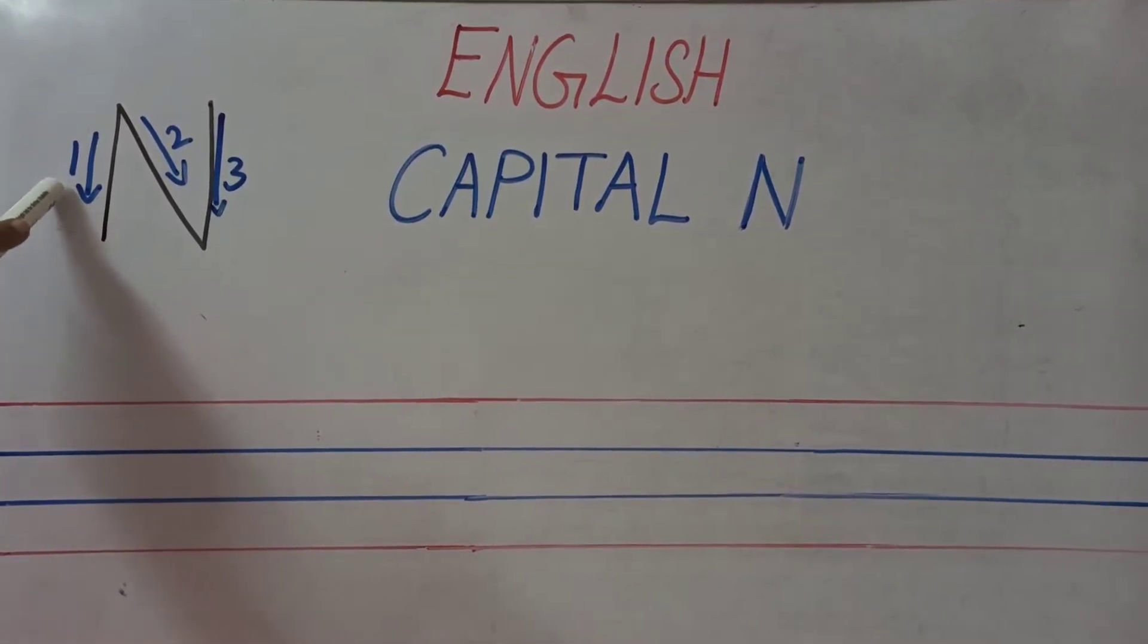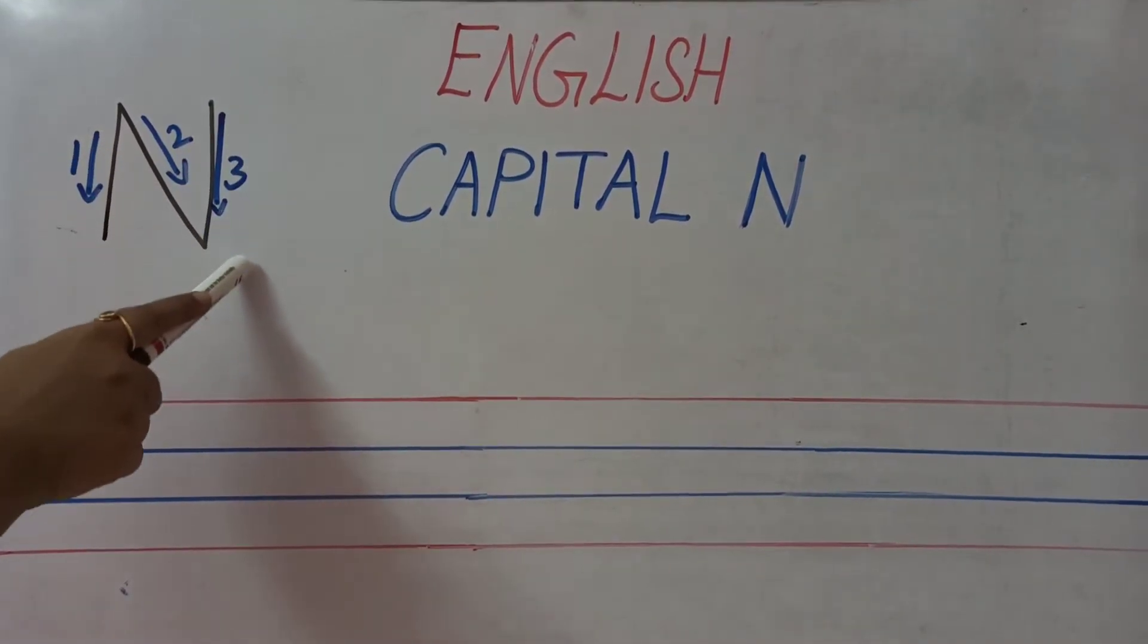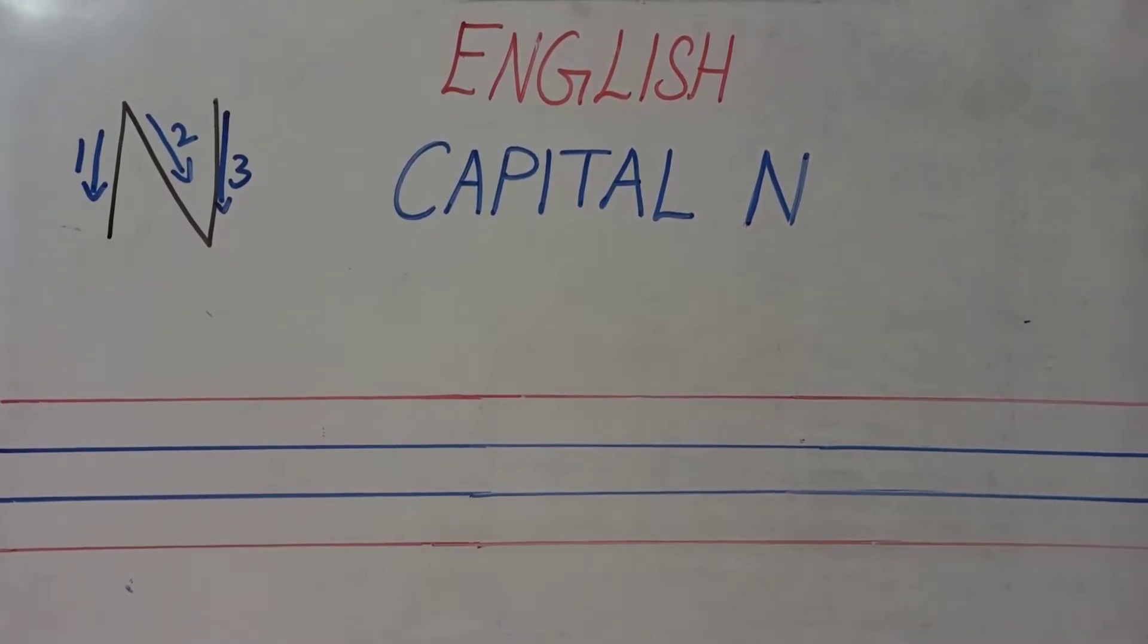One more time. 1 as a standing line, 2 as a slanting line and 3 as a standing line. This is called capital N. What is this letter? Capital N.